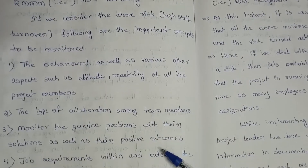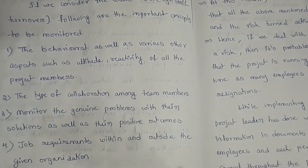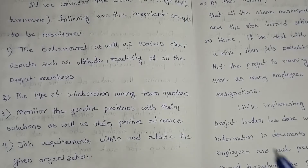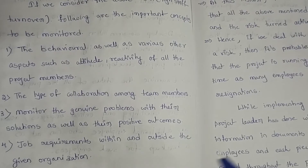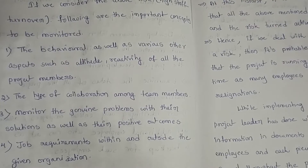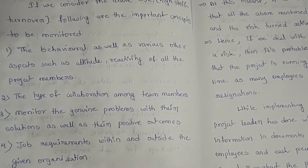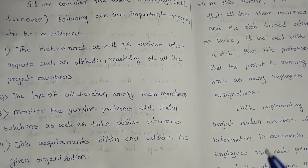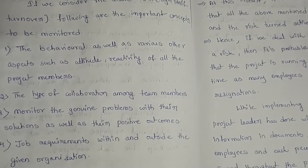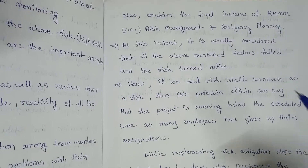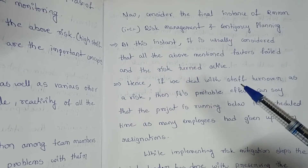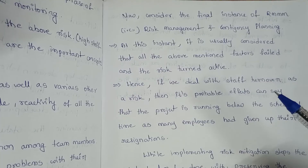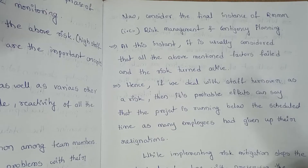We can also monitor genuine problems with their solutions as well as their positive outcomes, and consider the job requirements within and outside of the given organization. Now consider the final instance of RMMM — risk management and contingency planning.